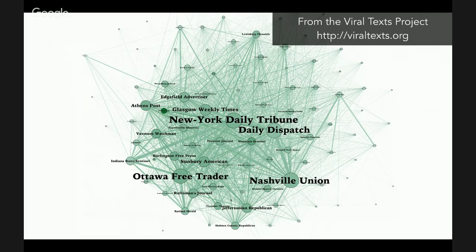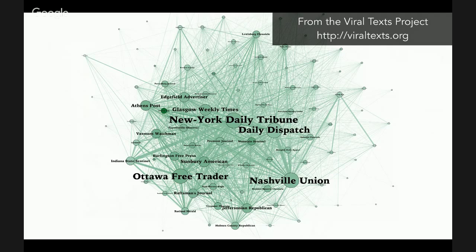By contrast, for something like the Viral Text Project, we're using computational methods to automatically find reprinted texts in 19th century newspapers — not just more copies of texts we already know are reprinted, but all kinds of textual borrowing happening within the newspapers, often unattributed and difficult to discern just by reading the newspapers.